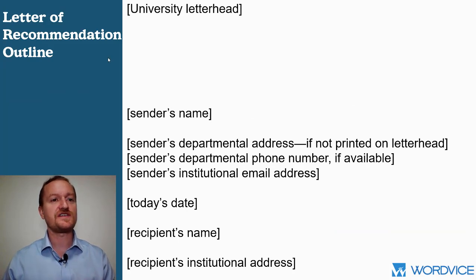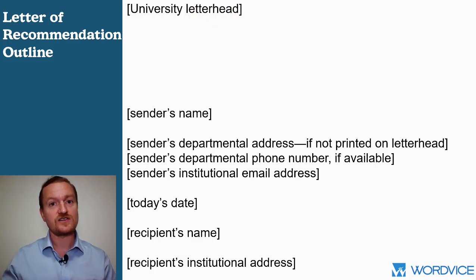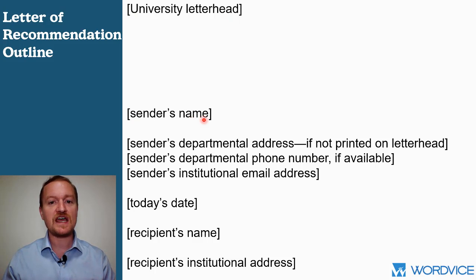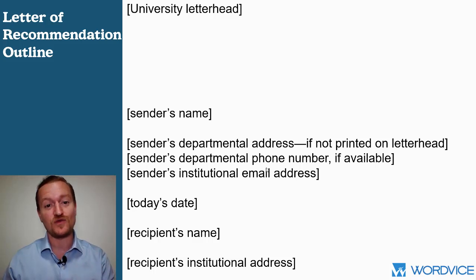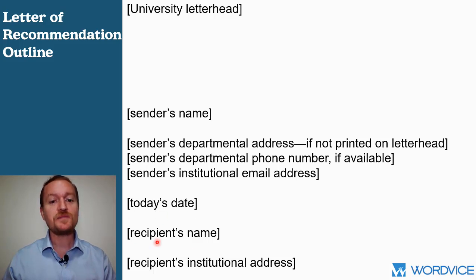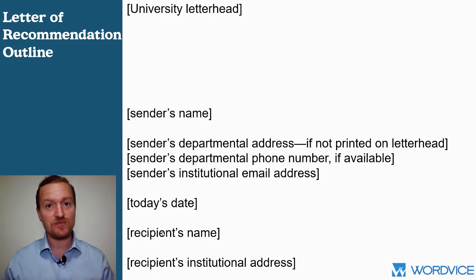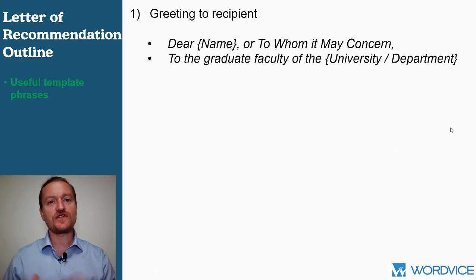Now let's go into the template. At the top is the university letterhead from the school where your recommender works — for example, the University of California, Berkeley — which makes the letter more official. Include the sender's name, address, and phone number. It's better to include more contact information than too little. Also include the date and the recipient's name and institutional address, though this may or may not be required depending on the school's instructions.